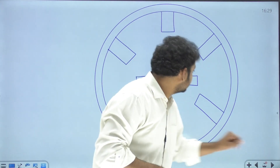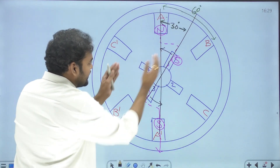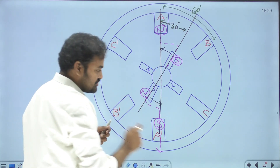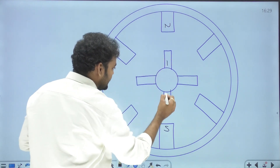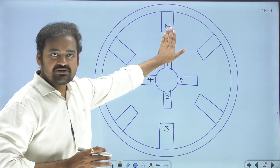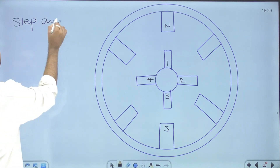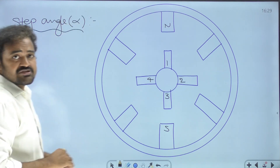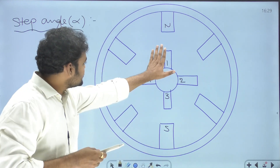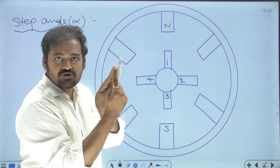After 30 degrees of counter-clockwise rotation, pole 1 moves to face A, pole 3 faces A-dash, pole 2 and pole 4 reposition accordingly. The stator pole axis and rotor pole axis are now aligned — no more reluctance torque, rotor stops. That 30 degrees of rotation is what we call the step angle, represented by the letter alpha. Step angle is the angle by which the rotor rotates in one step.